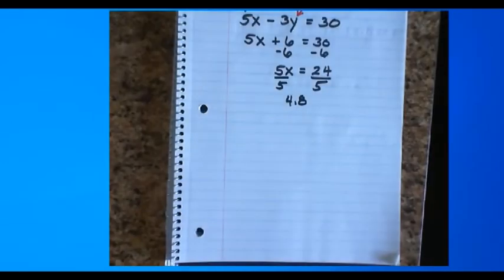24 divided by 5 is 4.8. So that's a little bit weird. I didn't expect it to go decimal, but hey, it still worked. Let's do another one.